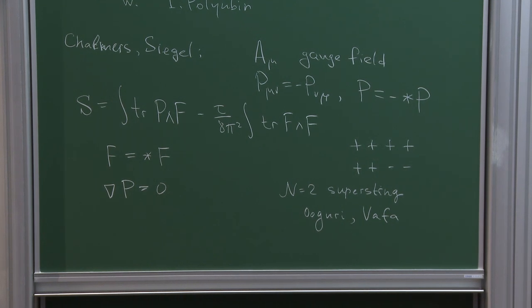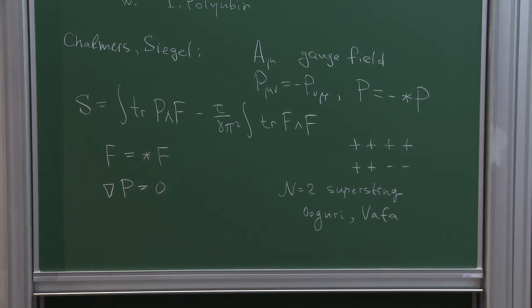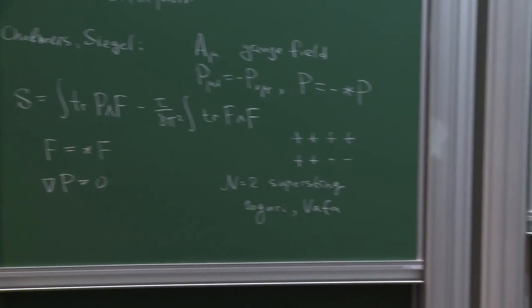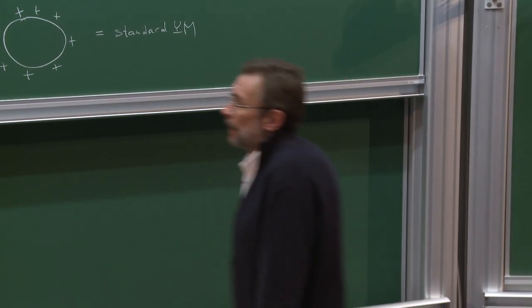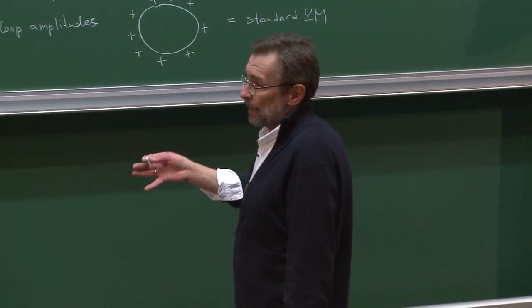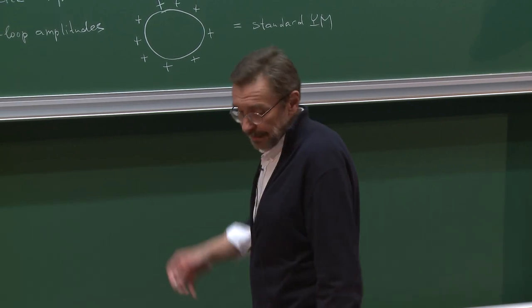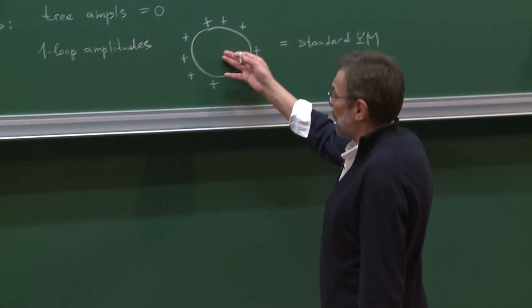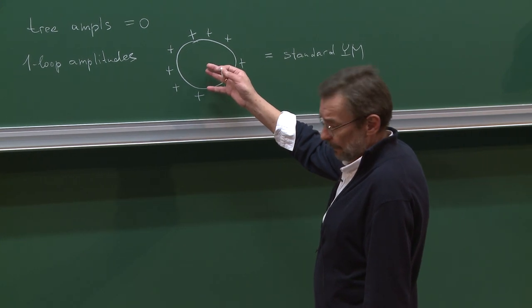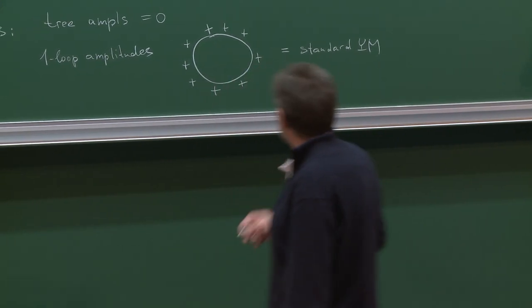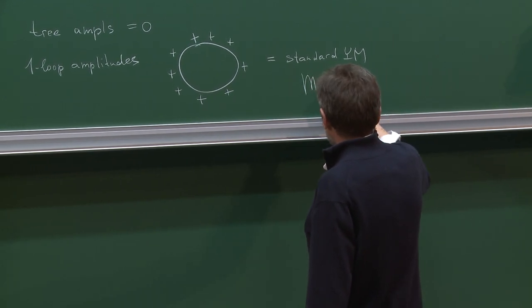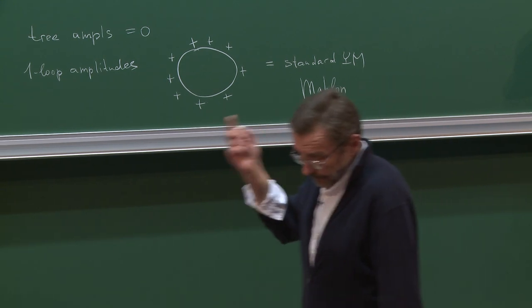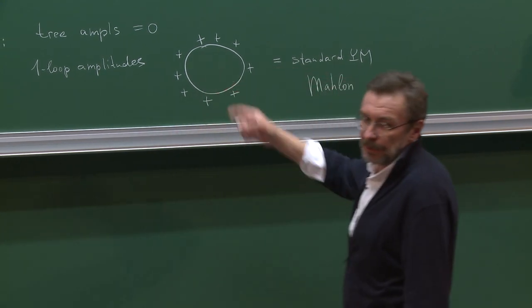This amplitude vanishes in any supersymmetric version of Yang-Mills theory, but in standard Yang-Mills it is non-vanishing, and it is the only amplitude that can appear for this self-dual Yang-Mills theory. The formula for this amplitude is known since the 1990s — it was computed by Mahlon, giving a very explicit formula for an arbitrary number of legs.